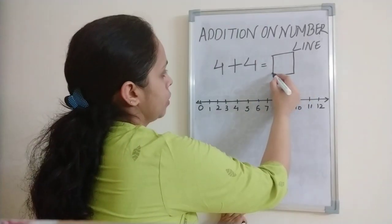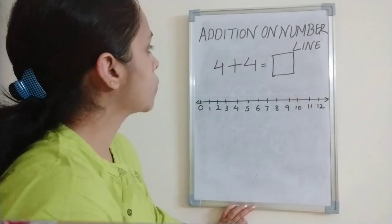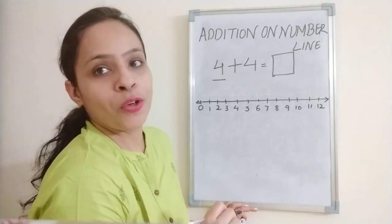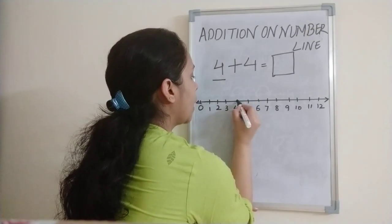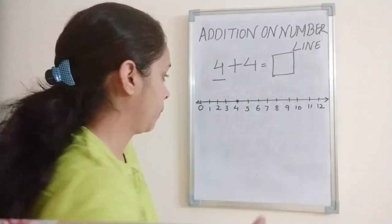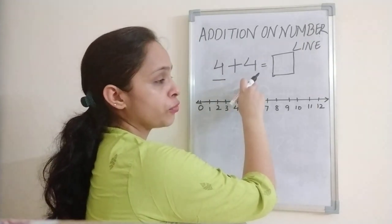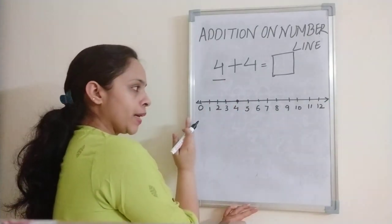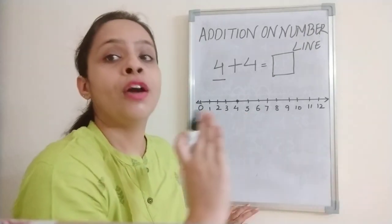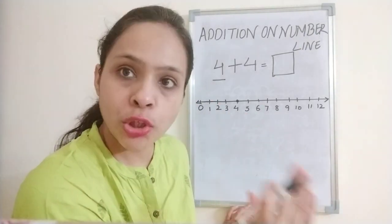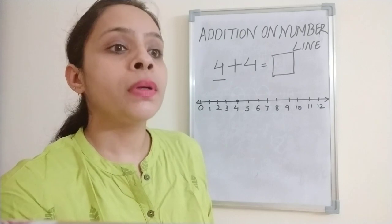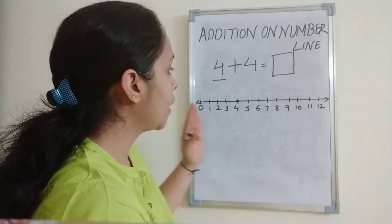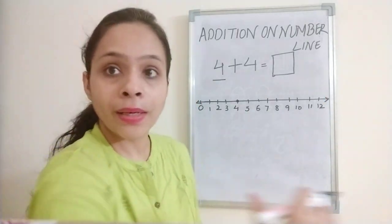So now which numbers do you want to add? Let's take the example of four plus four. This equals what? First, the frog is sitting on which number? The frog is sitting on number four. We will mark it so we don't make a mistake. Then how many steps does the frog need to take? Four steps. Will we go forward or backward? Forward, because this is addition — numbers are increasing, so we move ahead on the number line.